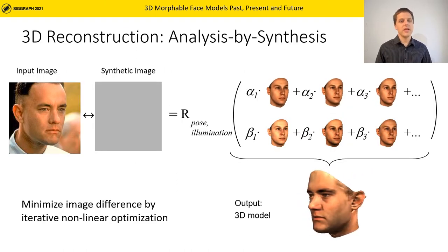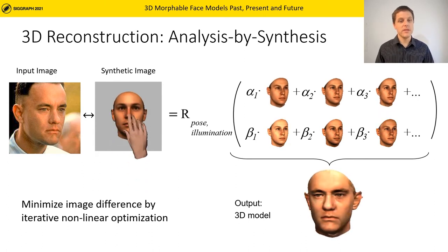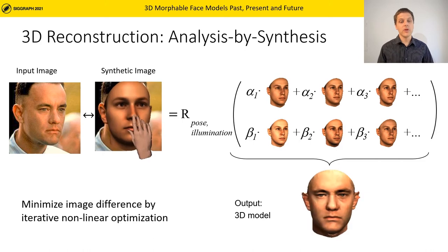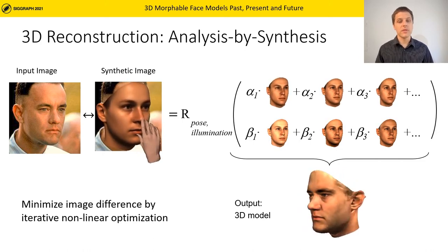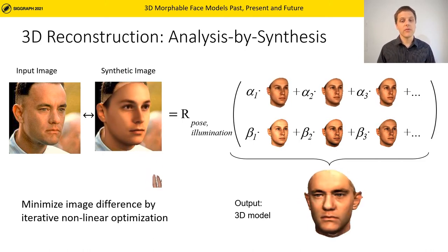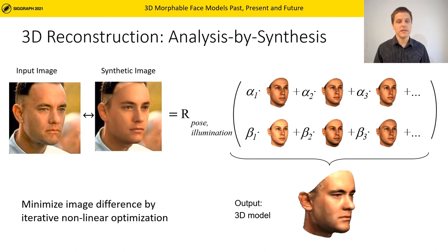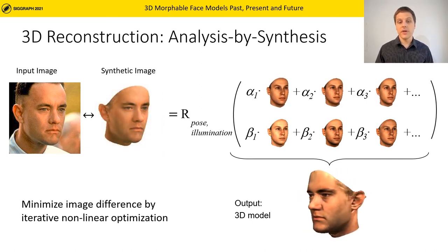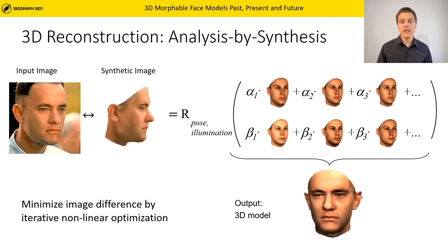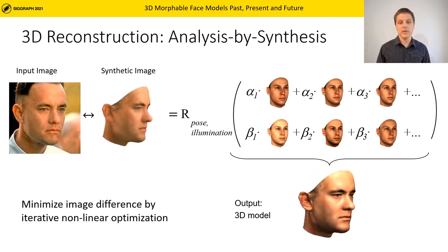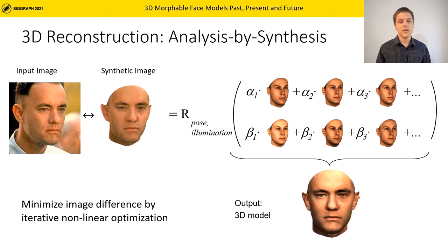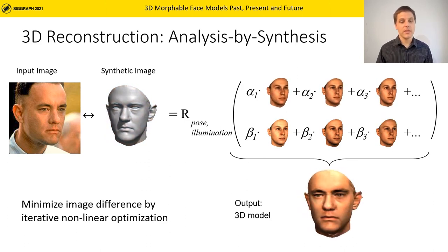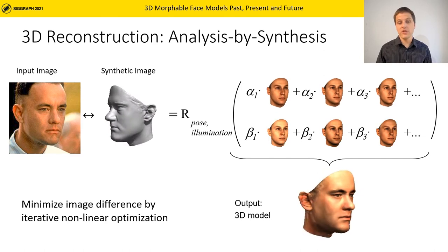The main application of 3D Morphable Models is 3D face reconstruction from a single image. This is an ill-posed problem and the Morphable Model restricts the solution space to morphologically plausible faces. The idea of analysis by synthesis is to use computer graphics to synthesize an image that is as similar as possible to the target image. To reconstruct the face this way, we aim to find the optimal rendering, shape, texture and illumination parameters.